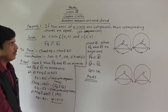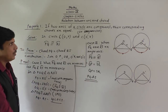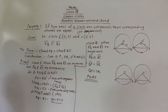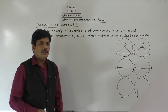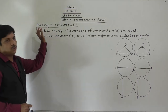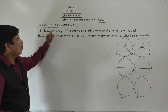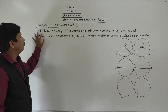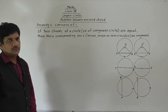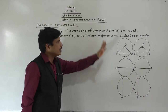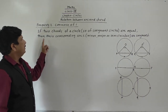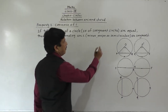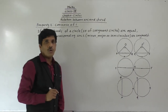Property number 2 is the converse of property number 1: if two chords of a circle, or of congruent circles, are equal, then their corresponding arcs — whether minor, major, or semicircular — are congruent.